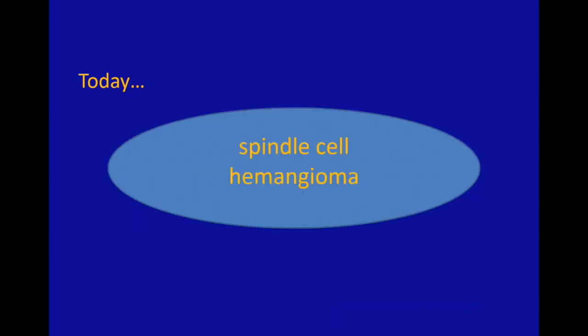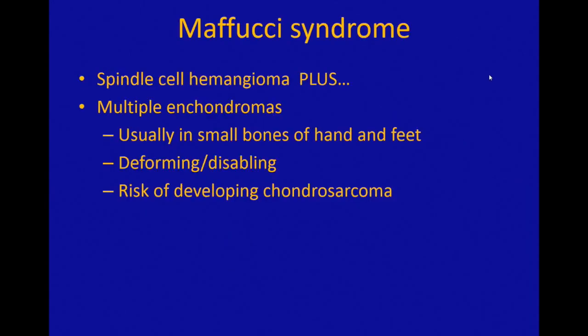What we now call them is spindle cell hemangioma — you get the thumbs up to call it spindle cell hemangioma. They're important to know about because they are sometimes seen in Maffucci syndrome. Maffucci syndrome is the coexistence of spindle cell hemangiomas plus multiple enchondromas, or benign cartilage tumors, of the bones — particularly the small bones of the hands and feet.